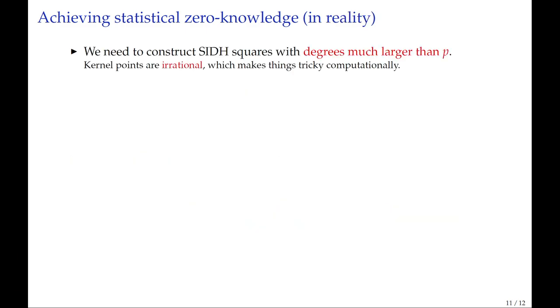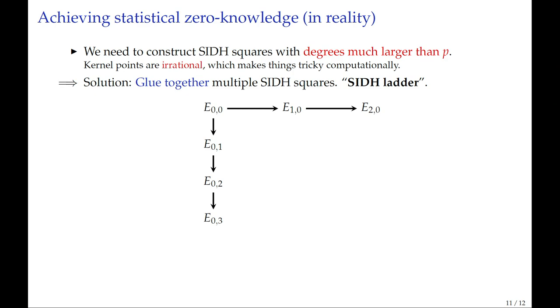So how do we construct proof that uses longer walks? We need the degrees of the isogenies to be much longer than the prime p, which means that the kernel generators of these isogenies are defined not over FP squared, but over extremely large extension fields, which complicates things from a computational point of view. Our solution is to take many different SIDH squares, glue them together, and obtain what we call an SIDH ladder. So rather than taking just one isogeny that is FP2 rational, we do multiple hops. We take this one isogeny whose kernel is defined over FP2, and then we repeat the process.